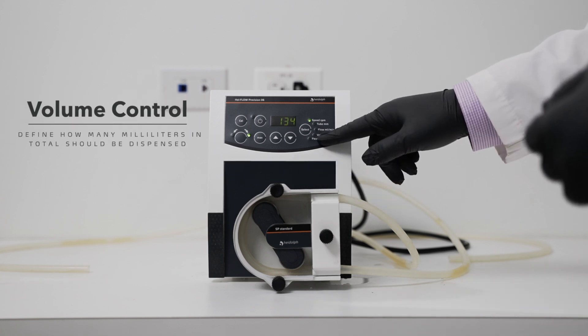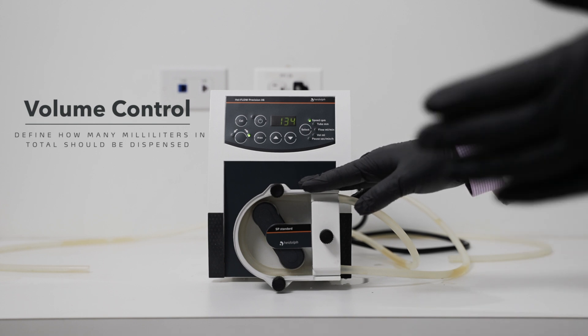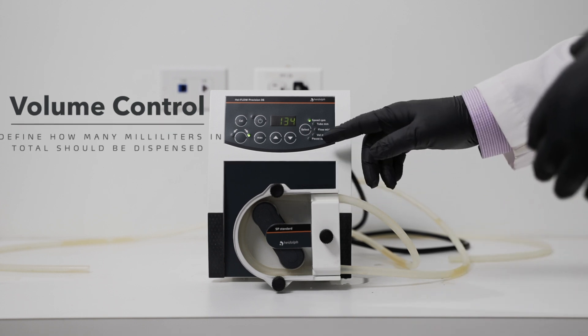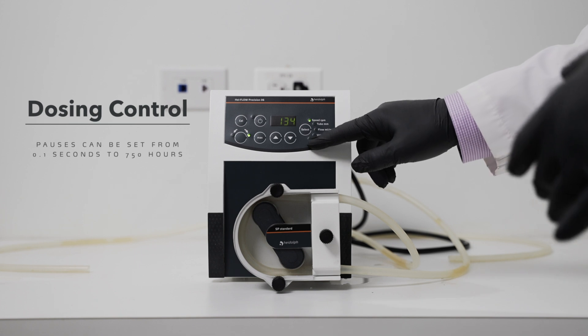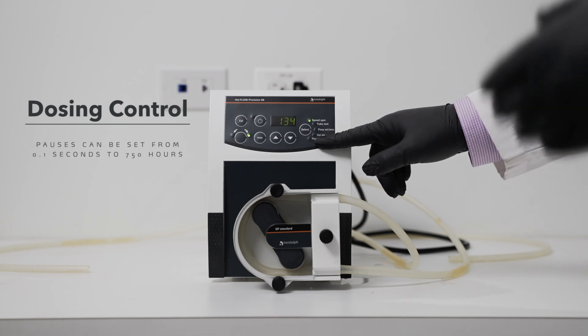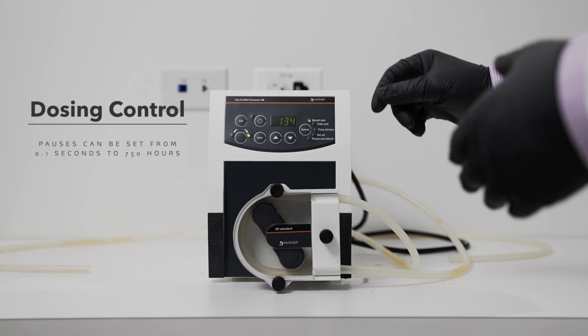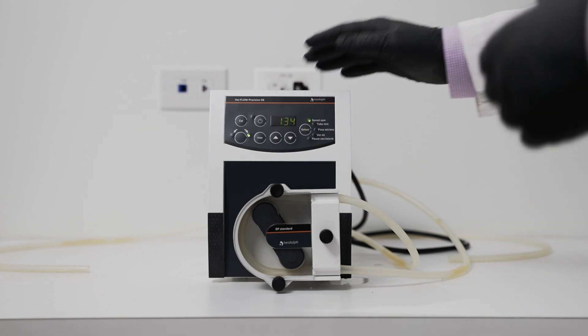You have a volume setting where you can preset a volume to be pumped from point A to point B, and there is a dosing option where you can set a pause in between every volume dose so that you can go in between test tubes without needing to start the pump a second time.